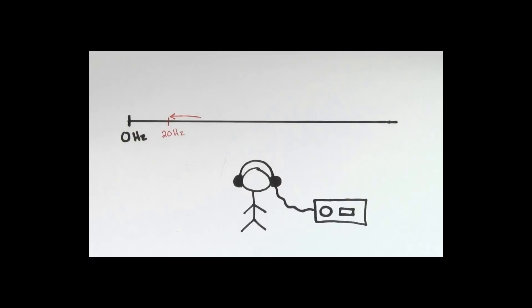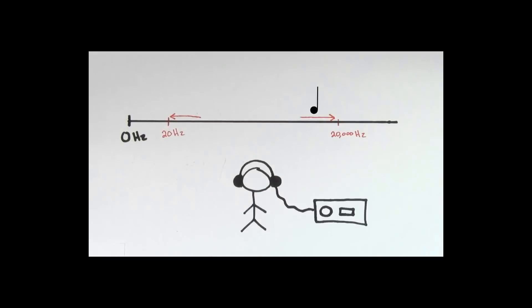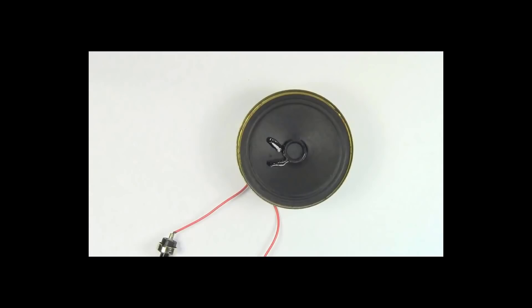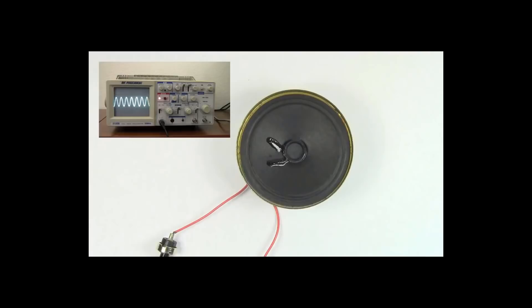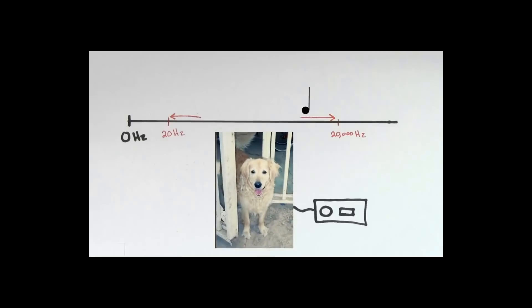Humans can hear frequencies as low as about 20 hertz and as high as about 20,000 hertz. But if a speaker were to oscillate air back and forth more than about 20,000 times per second, it would create sound waves, but we wouldn't be able to hear them. For instance, this speaker is still playing a note, but we can't hear it right now. Dogs could hear this note though — dogs can hear frequencies up to at least 40,000 hertz.